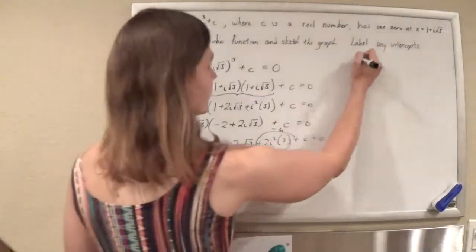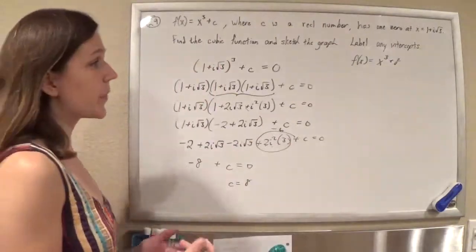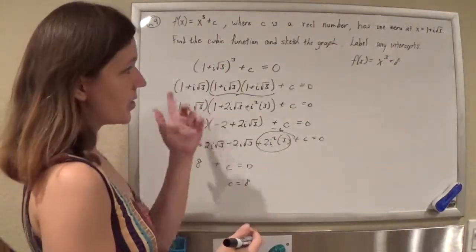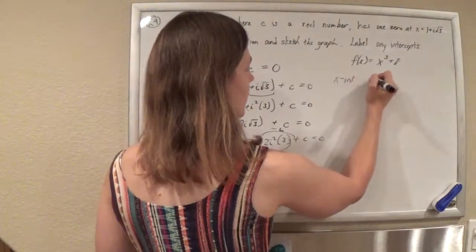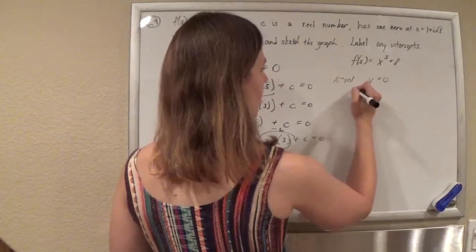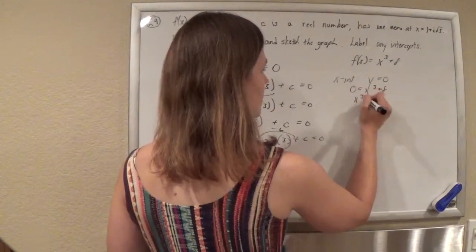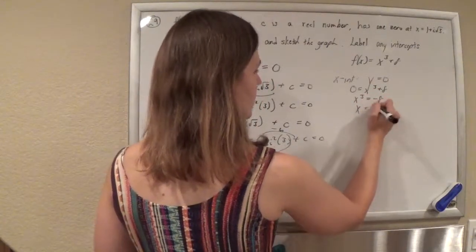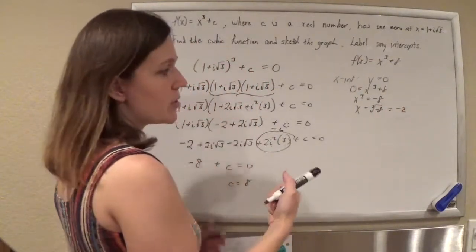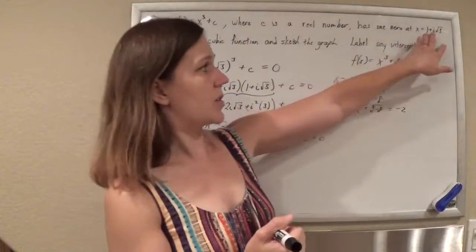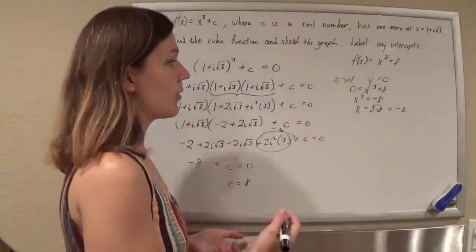So negative 8 plus c equals 0, which means c is 8. Our function is x³ + 8. Now we just want to sketch the graph and label the intercepts. For the x-intercept, let y equal 0: x³ = −8, so x = the cube root of −8, which is −2. That gives us the real intercept on the graph. The imaginary zeros are 1+i√3 and 1−i√3, but we don't graph those.